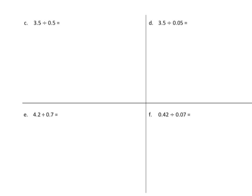This builds on yesterday's in that we no longer have unit fractions in the divisor. So we're going to rewrite this division problem as a fraction. I have 3 and 5 tenths — my dividend becomes my numerator, my divisor becomes my denominator. Now how many tenths do I have here? I have 5 on the denominator — we see that we have 5 tenths.